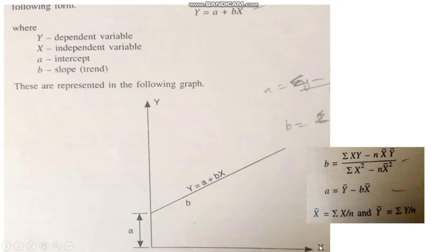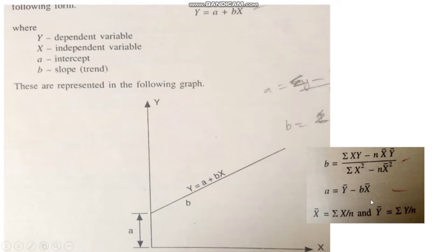Looking at the background of the regression equation on x and y axes: the x-axis has the independent variable and the y-axis has the dependent variable. The regression equation is y = a + bx, where a is the intercept — the value from zero to the point where the line starts — and b is the slope, representing the trend.